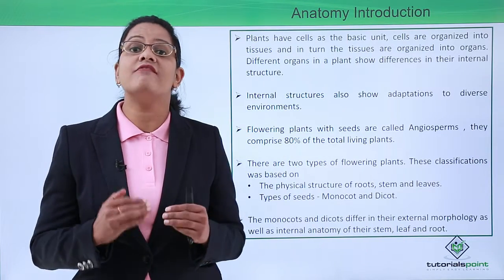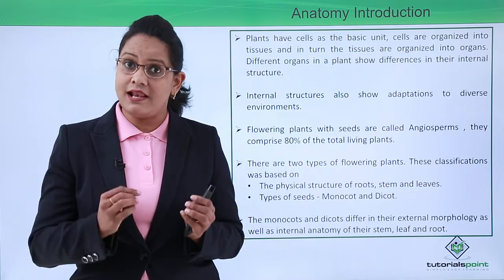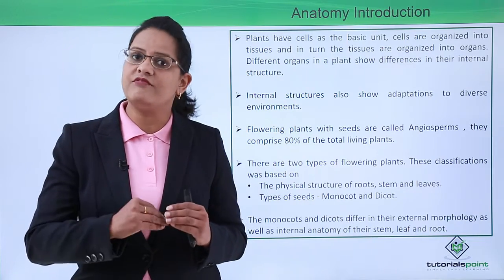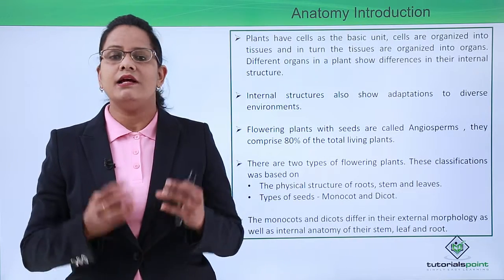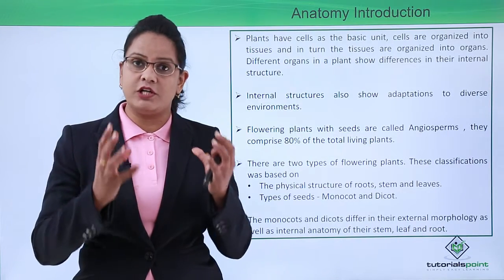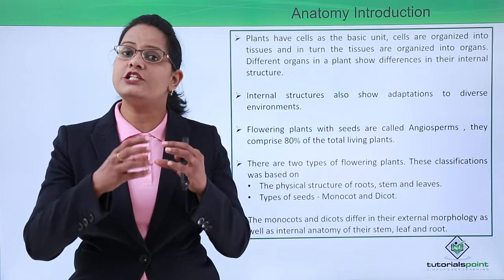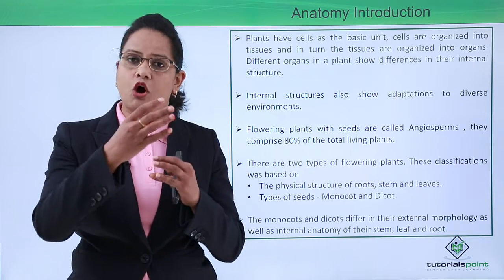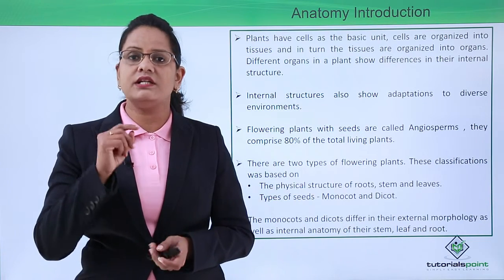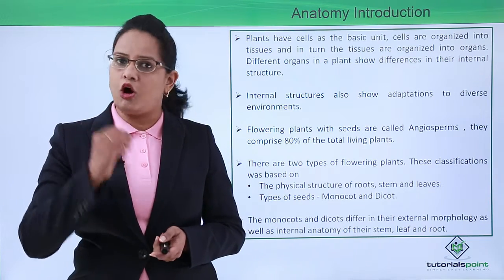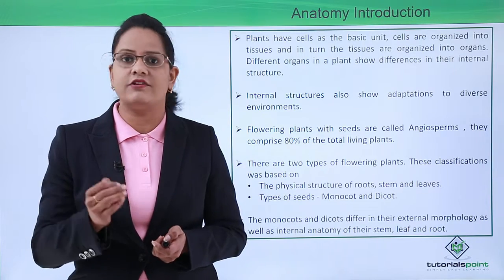All biological structures have levels of organization. The cell is the basic unit — we start from the cell and move towards the organ system. Cells aggregate together to form tissues, tissues join together to form tissue systems, tissue systems form organs, and organs form organ systems. So the cell is the basic unit of all organization.